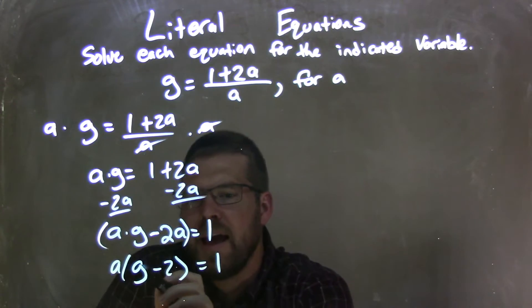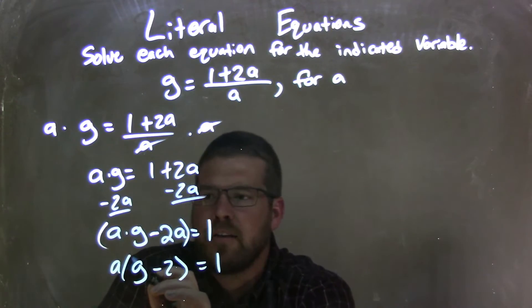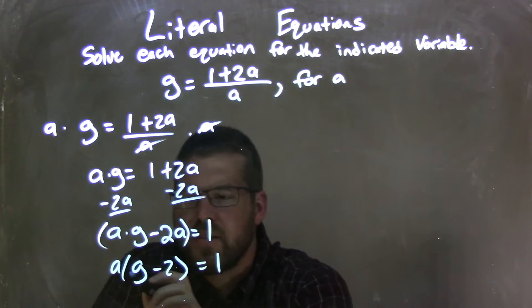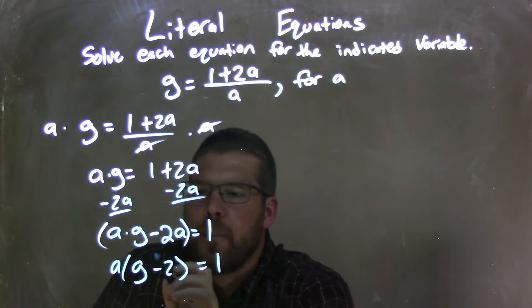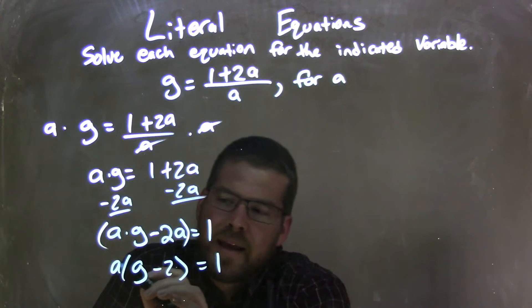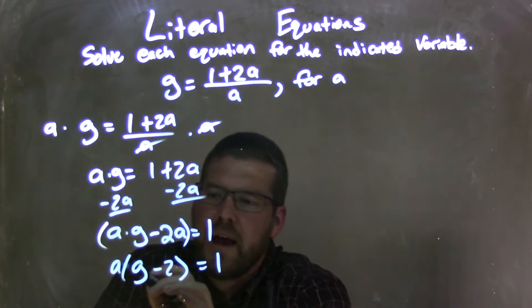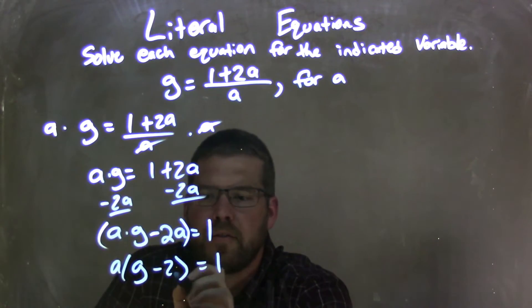So you see when I'm pulling out that a, a is isolated. Well, not really isolated I guess, but I've pulled out so that if I multiply it back in, a times g is ag, and then a times 2 is 2a, and there's a subtraction there.